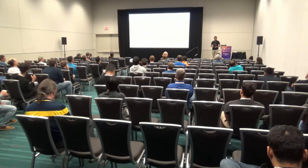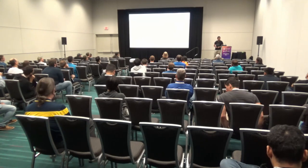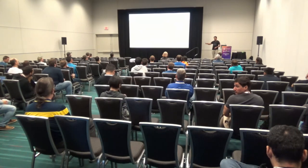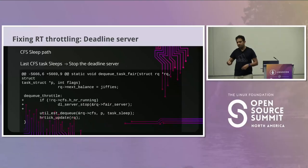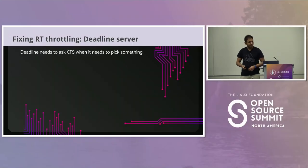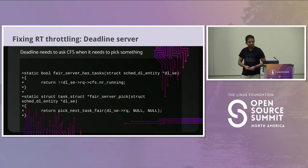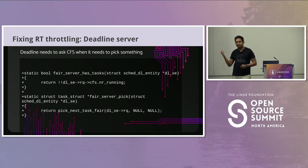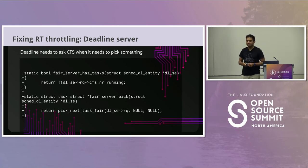The first CFS task that wakes up triggers the fake deadline task. In the sleep path, we stop the deadline server when the last CFS task is no longer runnable. We also need extra functions so that deadline can ask CFS: 'Do you have anything to run?' and 'I'm running now — can you pick something for me?' In the deadline pick loop, when it picks a deadline entity that is the fake deadline task, it calls the CFS function to do the actual pick.